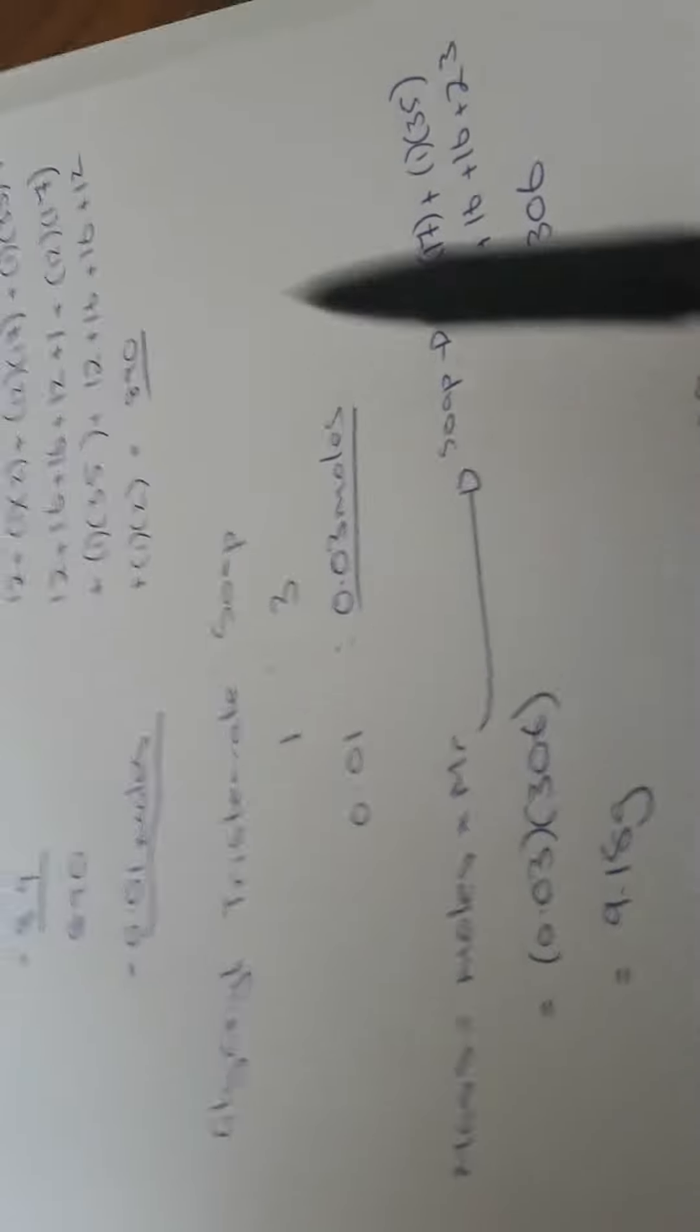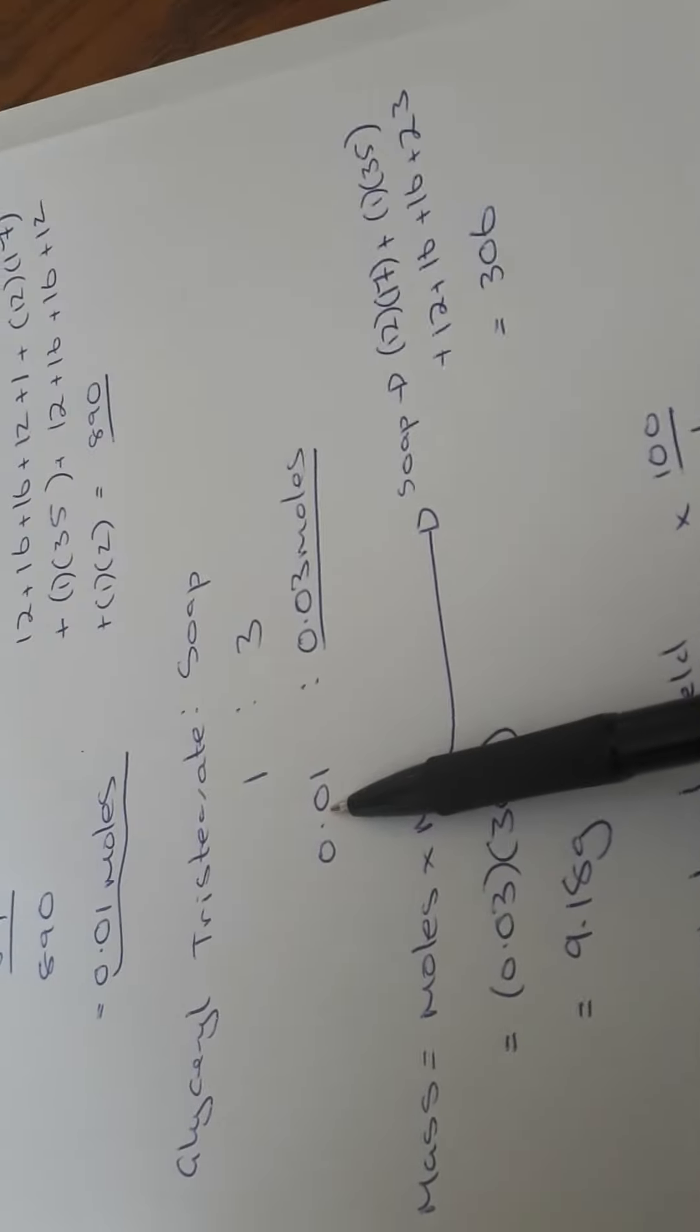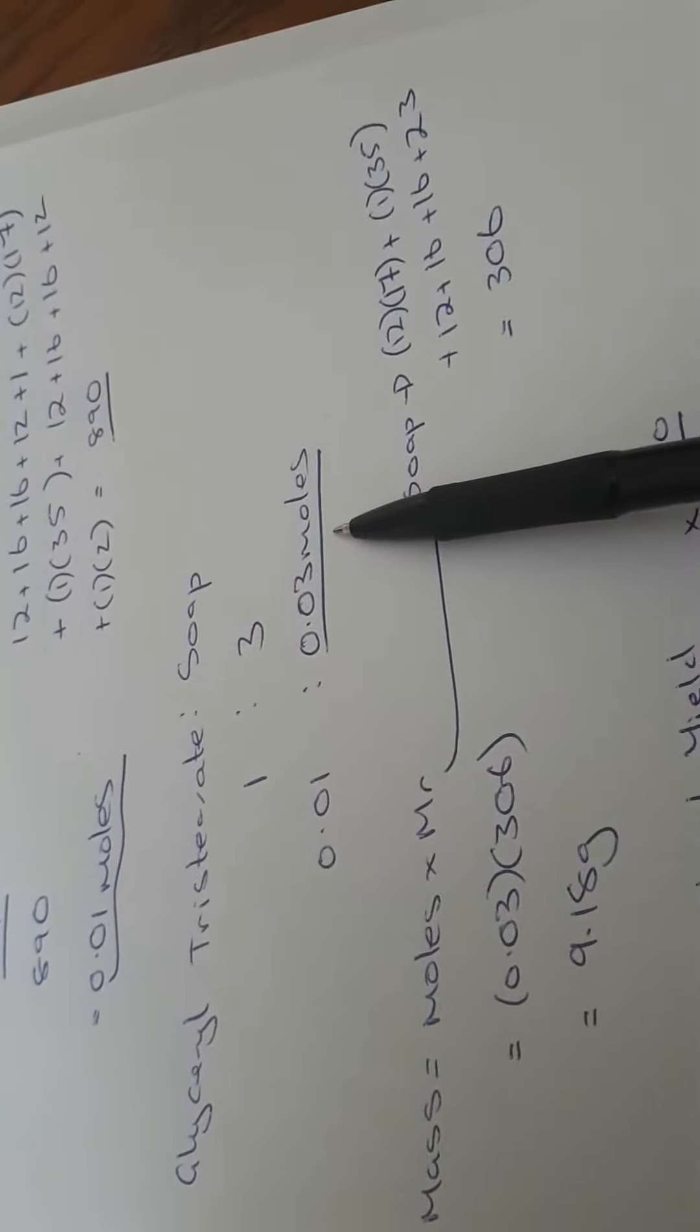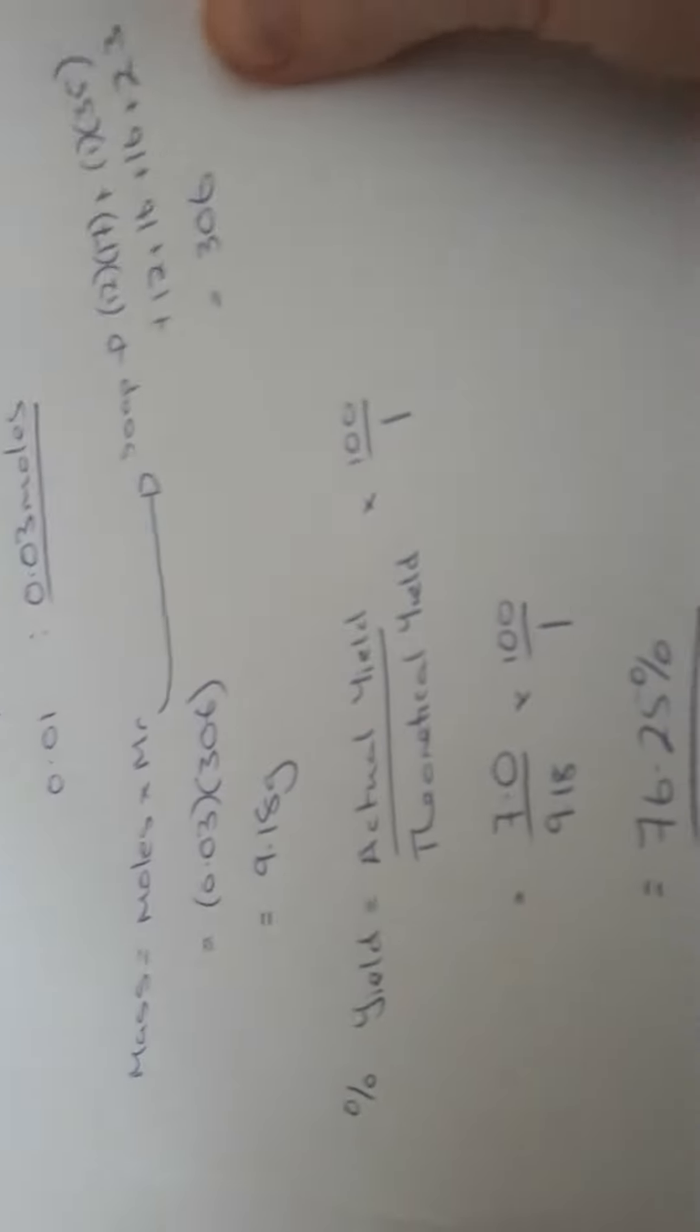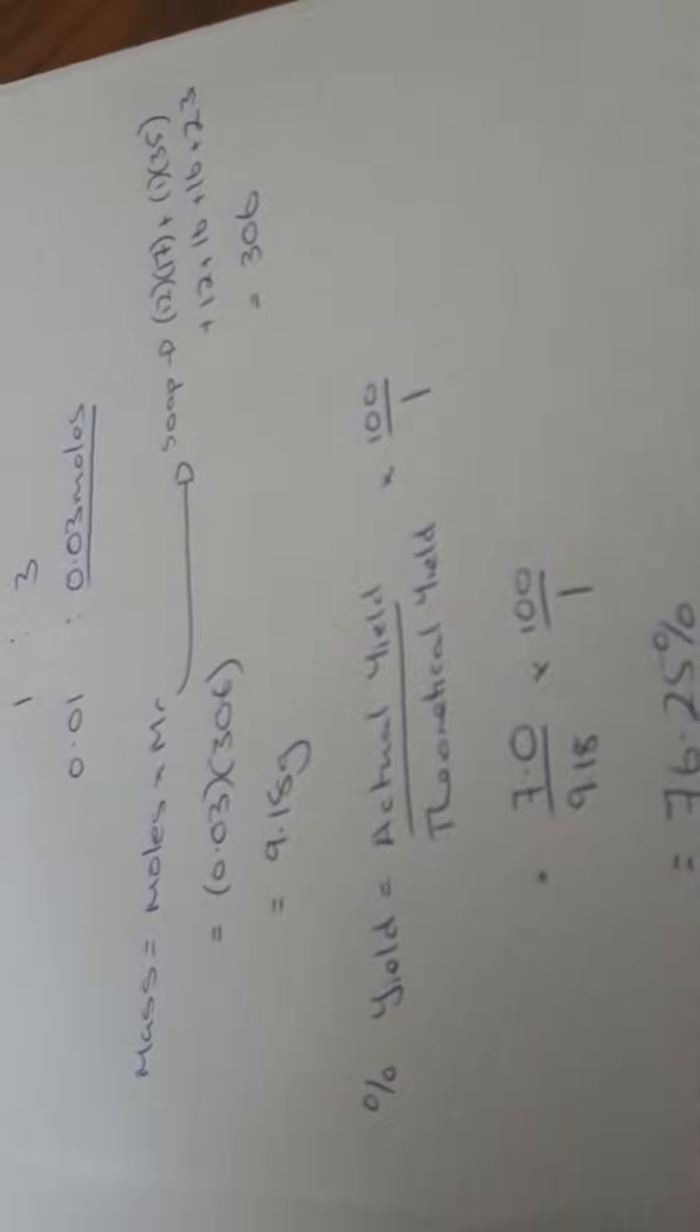So if I look here, my glycerol triciarate is 1, my soap is 3, so ratio 1 is to 3. So if I have 0.01 moles of glycerol triciarate, I have 0.03 moles of my soap. So I'm asked for my percentage yield. I'm told in the question that I end up with 7.0 grams of my soap.